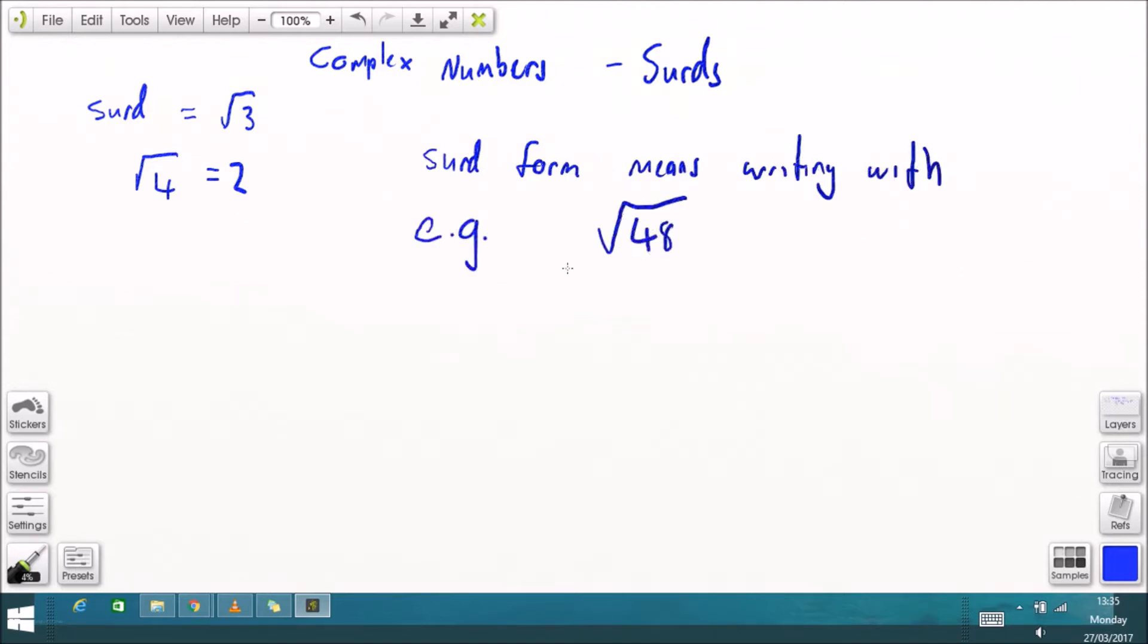Surd form just means writing it with the square root, for example the square root of 48. Once again you could write that as a decimal just less than seven but not accurate unless you write it with the brackets.